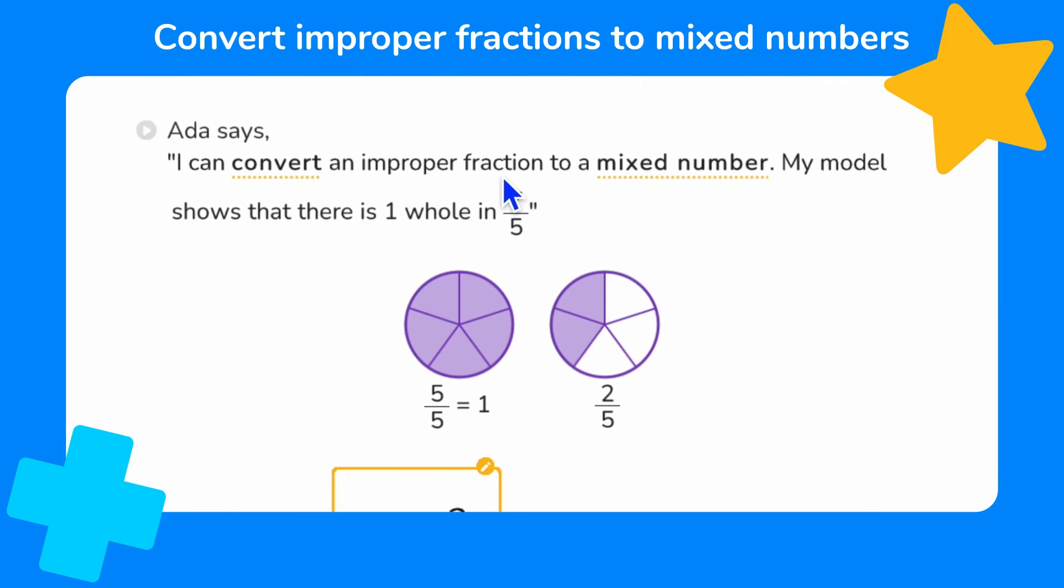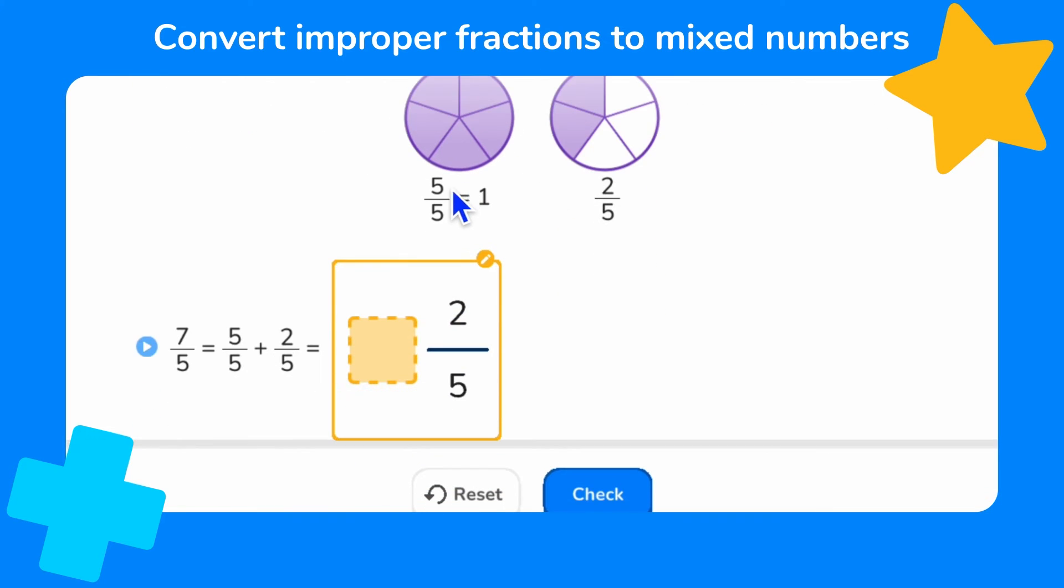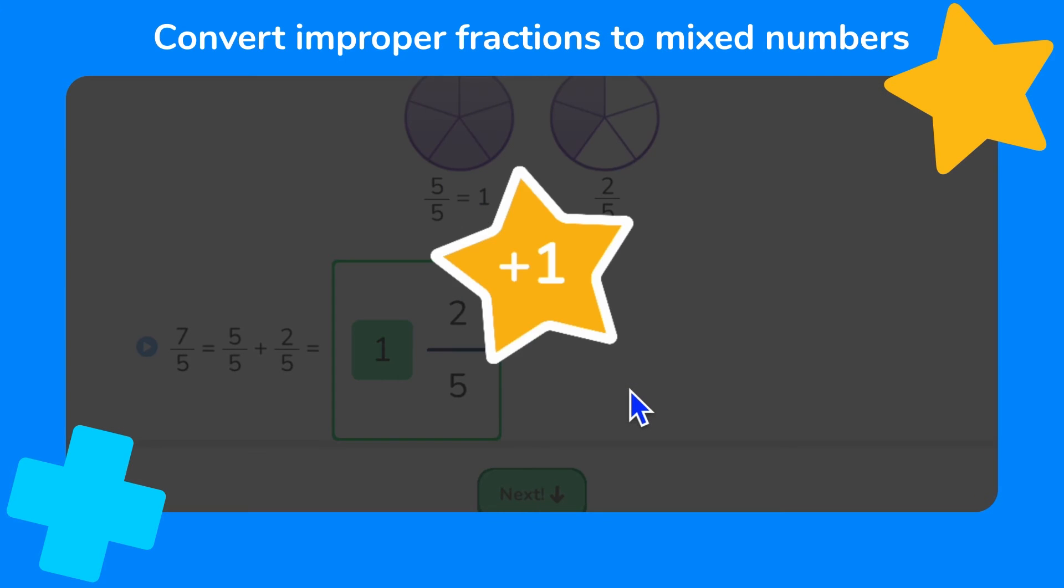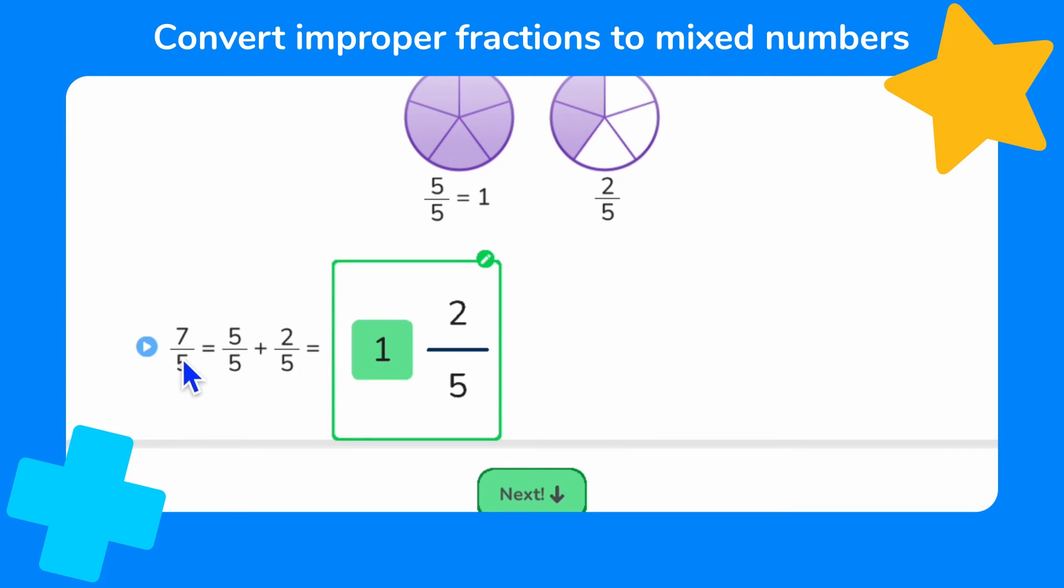Now to convert 7 fifths from an improper fraction to a mixed number, we need to find how many wholes there are. So looking at this model, 5 fifths is equal to 1. So we can say that 7 fifths is equal to 5 fifths plus 2 fifths. Or how else could we write 5 fifths? We know that 5 fifths is equivalent to 1 whole. So in here, we can show 5 fifths as 1 whole. So we know that 7 fifths is equivalent to 1 whole and 2 fifths. So we write that as 1 and 2 fifths.